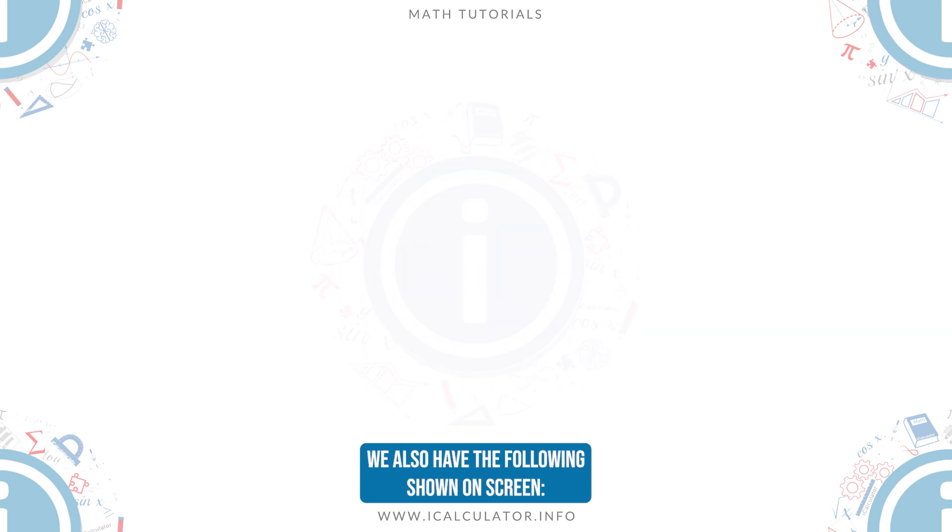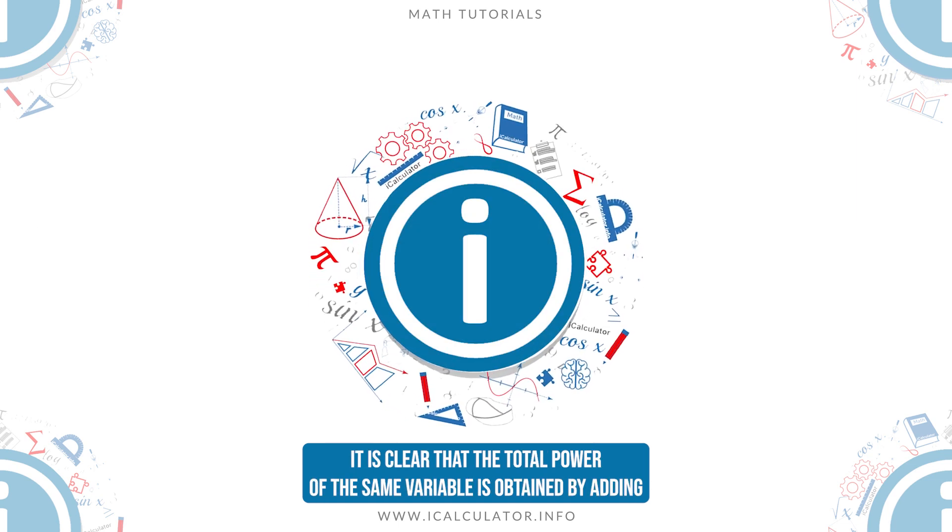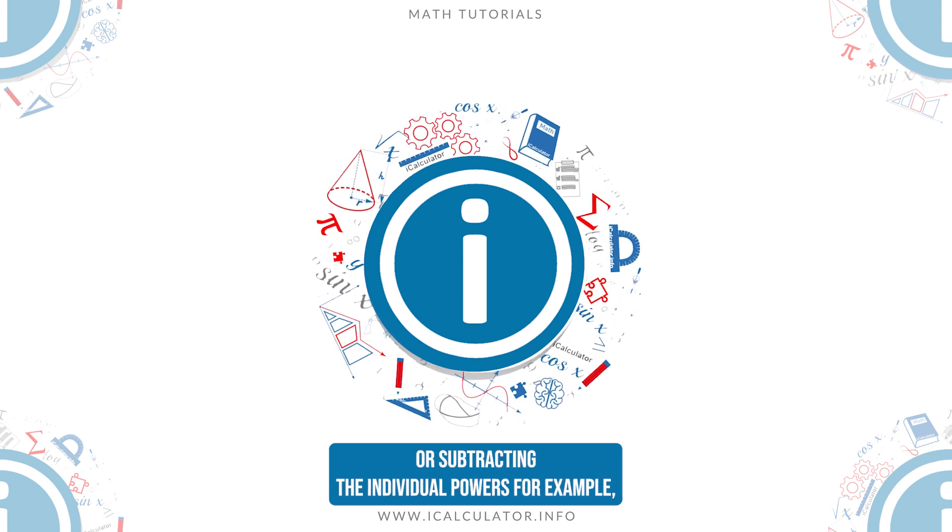We also have the following shown on screen. It is clear that the total power of the same variable is obtained by adding or subtracting the individual powers.